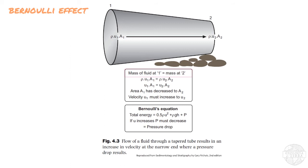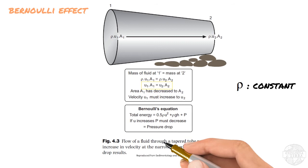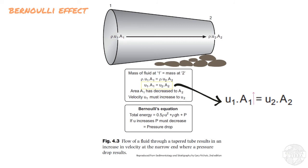So mass one has to be equal to mass two. And we can write this as density times the velocity times the area one has to be equal to the density times the velocity times the area two. But the density of the fluid remains constant, so the velocity times the area one has to be equal to the velocity times the area two.